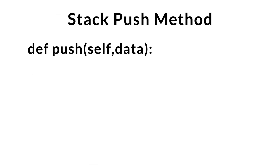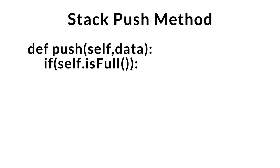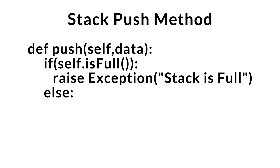Let's go over our push method. It has two parameters, the data param being the data that we want to insert at the top of the stack. First, we check to see whether or not our stack is full, using a convenience method called is_full, which we'll go over later. If our stack is full, we throw an error. Otherwise, we have space to insert data at the top of the stack. Since top holds the index of the current top element, we increment top to get the new top index, then insert the data.